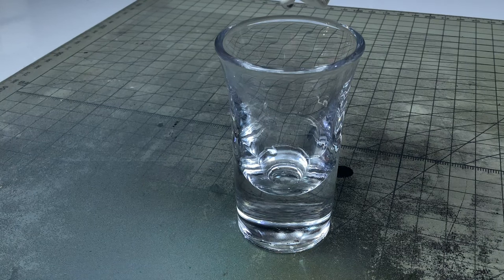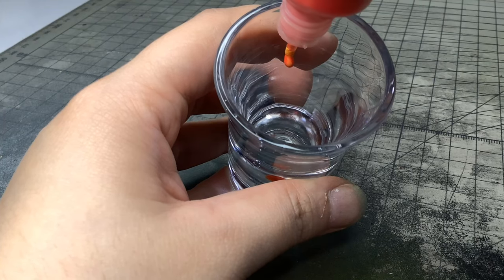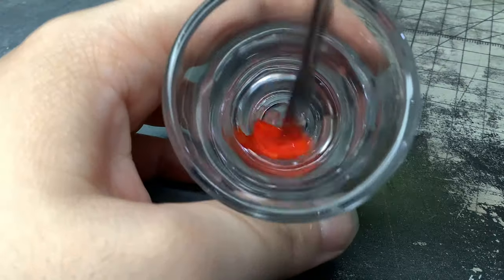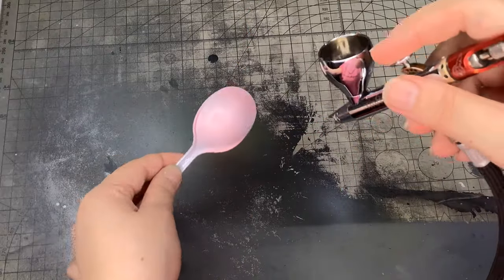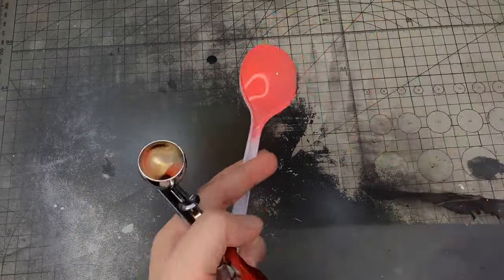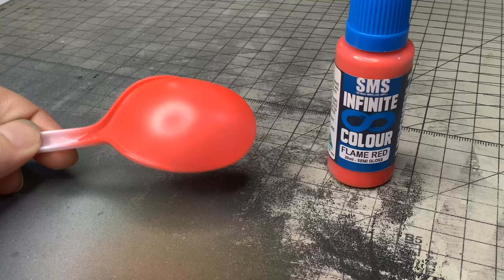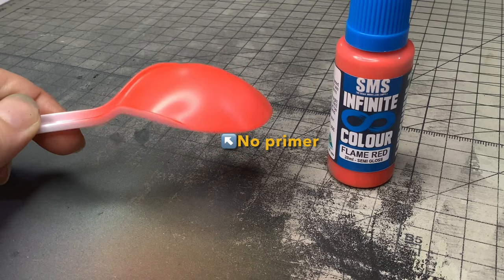I also wanted to test if it works well even without primer, since Vallejo Mecha Color can do just that. I'm using flame red with thinning sauce on a bare spoon. As you can see, it works the same. I didn't experience any flooding or the paint not sticking at all.